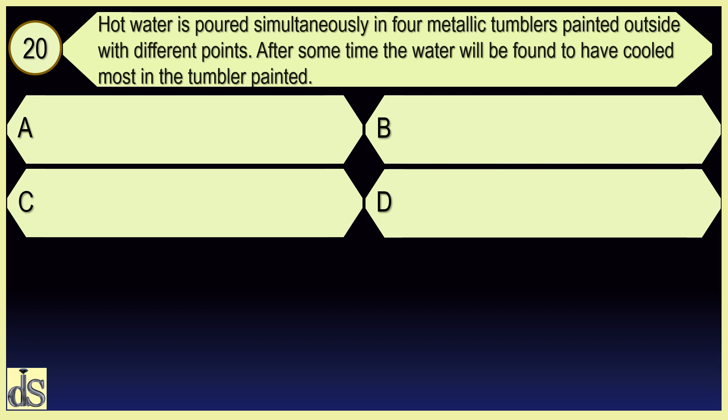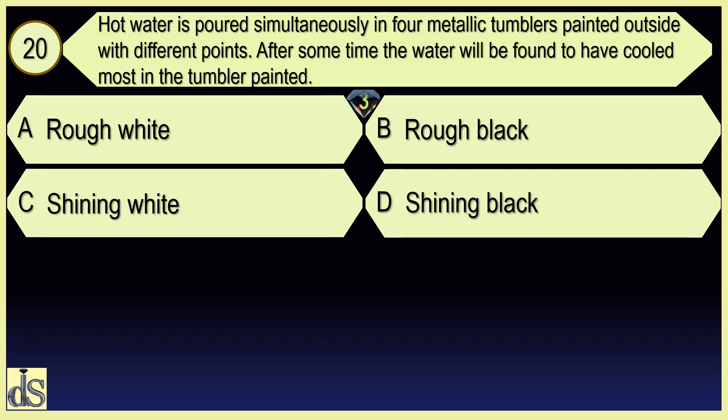Hot water is poured simultaneously in four metallic tumblers painted outside with different paints. After some time the water will be found to have cooled most in the tumbler painted rough black.